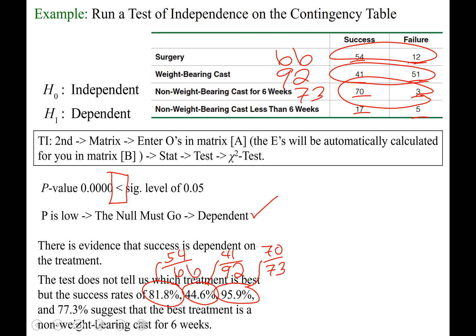And then the last one, the non-weight-bearing cast for less than six weeks, had a 77.3% success rate. That can be calculated by doing 17 divided by the total number that went through that treatment, which is 22. So 17 divided by 22.